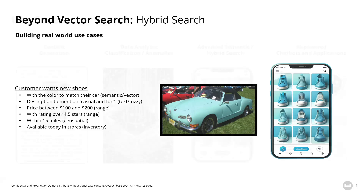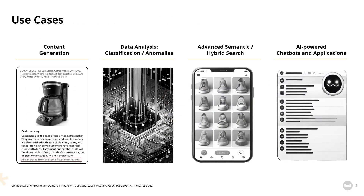What are some other common uses of vector search? Content generation is one — for example, product descriptions or summaries of pieces of content. Data analysis: spotting anomalies or classifying different images. Semantic or hybrid search, as we just described, combining vectors with other types of search techniques. Or AI-powered chatbots or applications delivering advanced customer interactions in natural language.